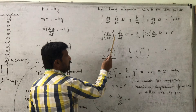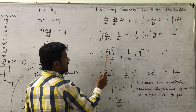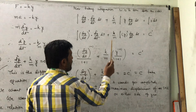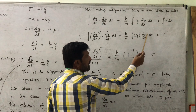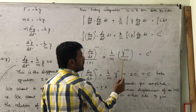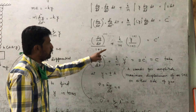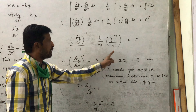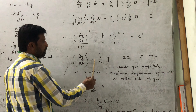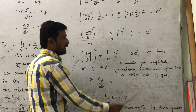We apply this rule: here (dy/dt)^1 and its derivative (d²y/dt²), so applying the formula gives (dy/dt)^2 / 2. Similarly y^1 and its derivative (dy/dt), so applying the formula gives y^2/2. Therefore: (dy/dt)²/2 + (k/m)·y²/2 = C′. Multiplying both sides by 2: (dy/dt)² + (k/m)·y² = C.